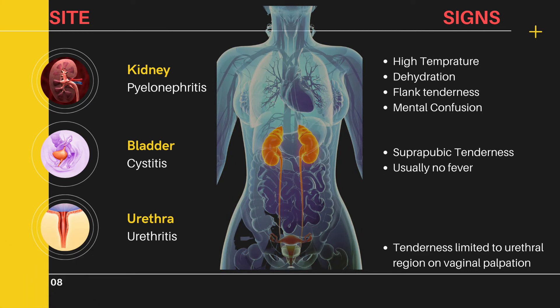Signs also vary depending on the site of infection. In pyelonephritis, the temperature is typically high — usually more than 102°F — with associated dehydration and sometimes mental confusion. Flank tenderness will be noted on palpation. In cystitis, the typical finding is suprapubic tenderness, and usually there is no fever. In isolated urethritis, tenderness limited to the urethral region on vaginal palpation is the typical finding.